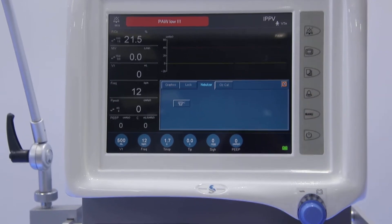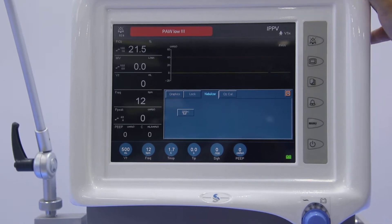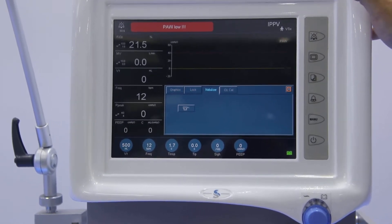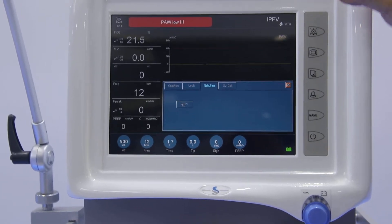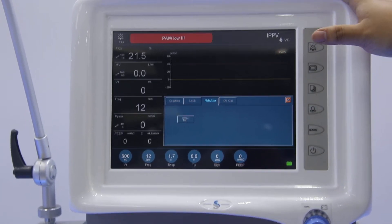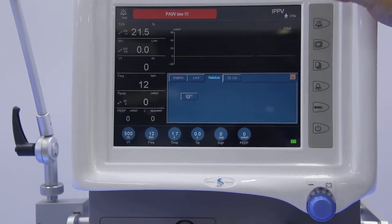The fourth one is the nebulizer function, also we call it the atomization. It means usually for some children and neonatal, they may need the medicine to mix with the breathing gas together for the curing of the disease. So we can use it. And this button is automatic. Once we press it, it will automatically give the gas with the medicine together.